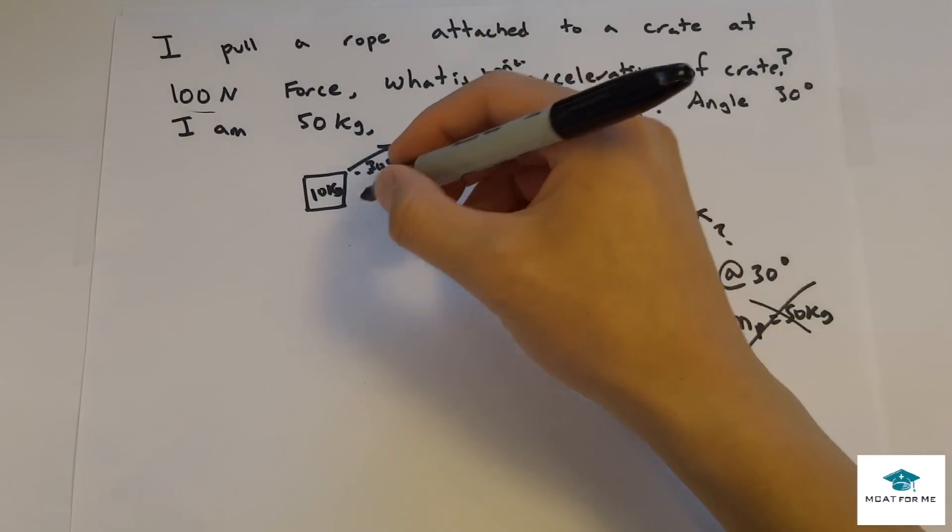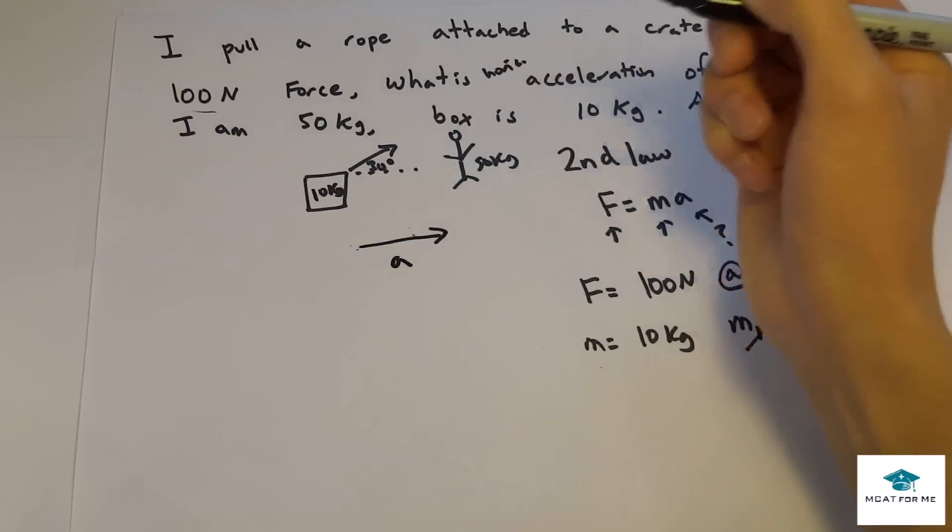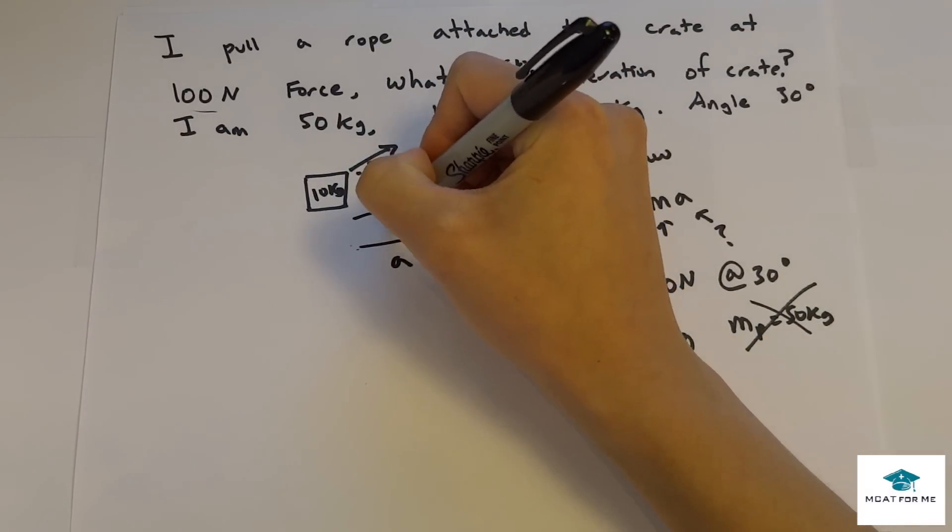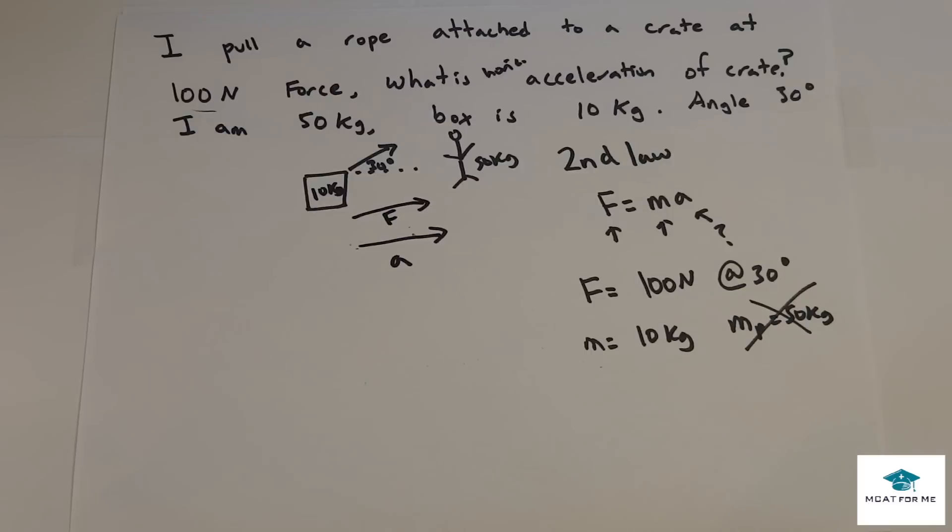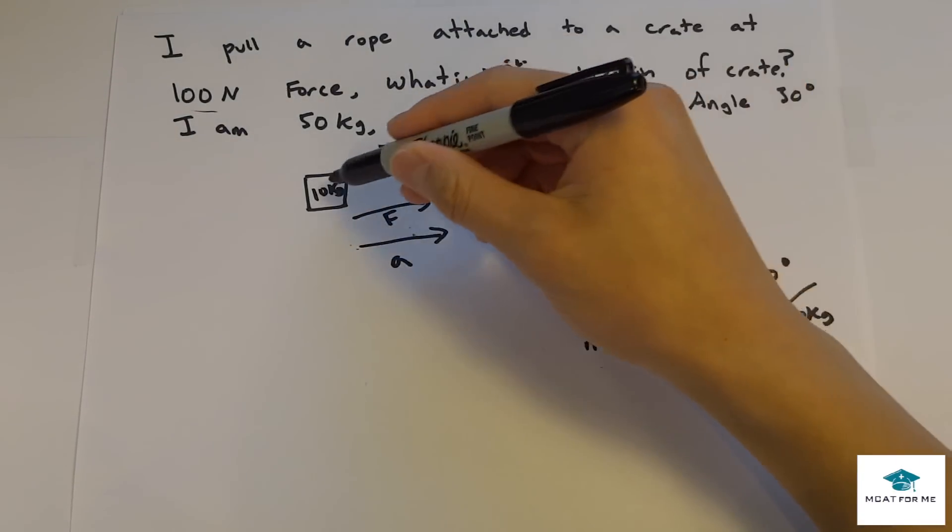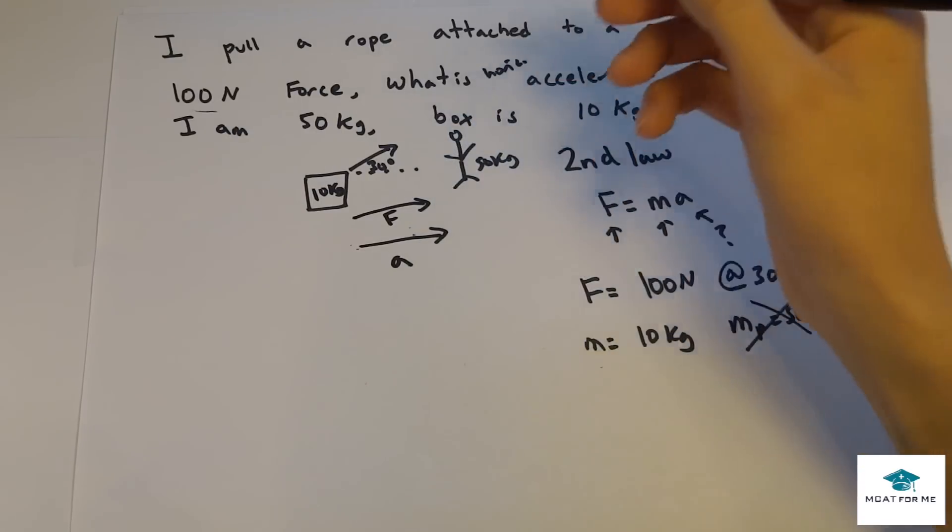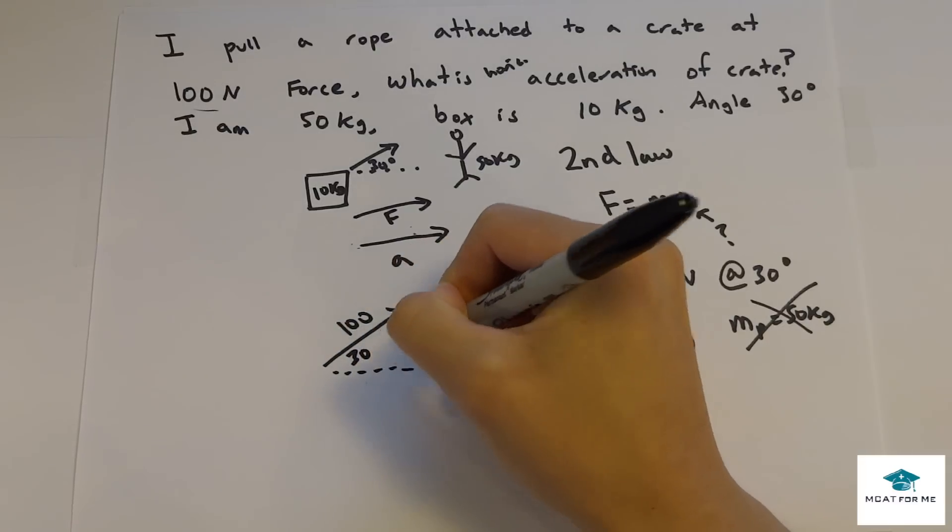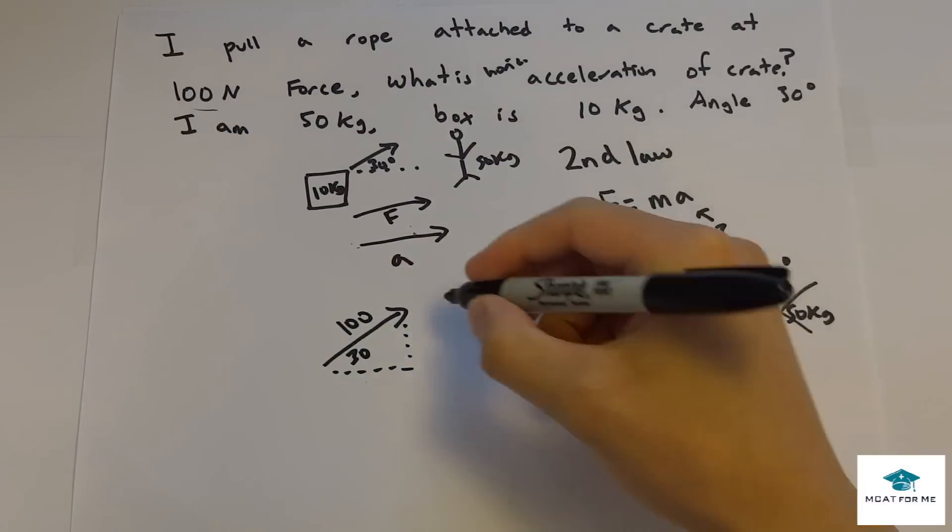So we also need to know since we want to find the acceleration in the horizontal, we want to also find the force in the horizontal. Because they have to be in the same direction. You won't have the same 100 newton force going in the horizontal as the vertical. This is 100 newtons at this angle of 30 degrees. So if you remember from our trig.